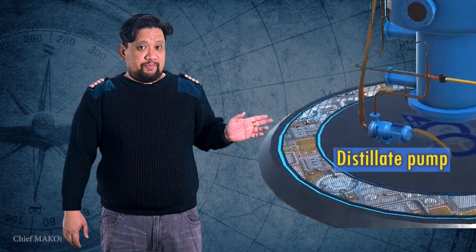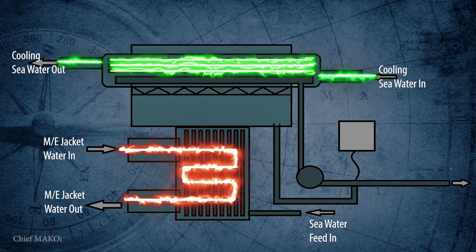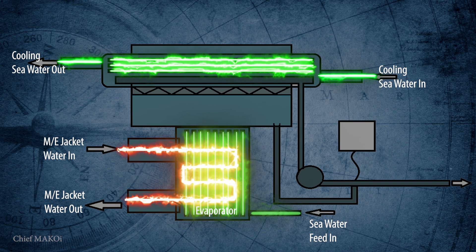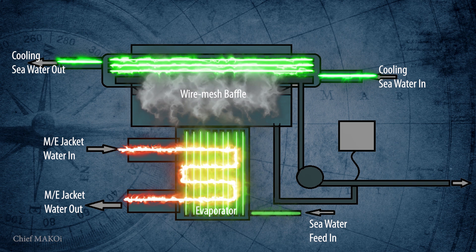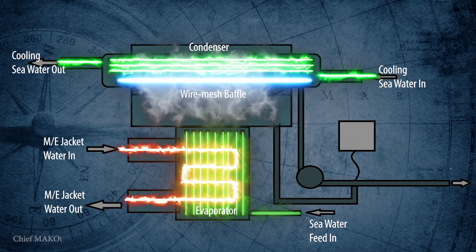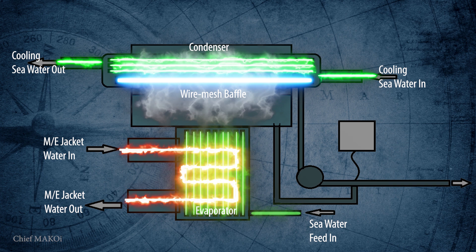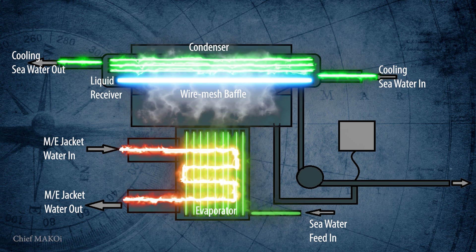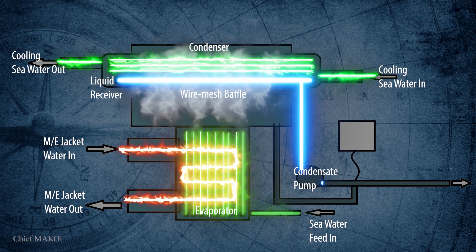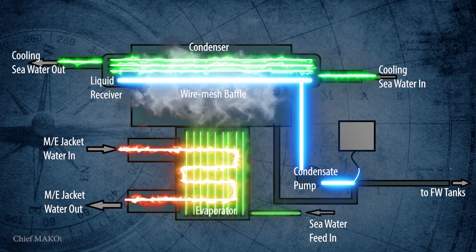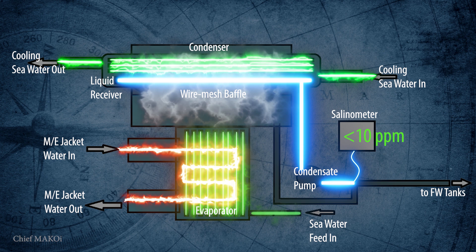So how does the distillation plant work? The flow operation begins when seawater enters the evaporator. From there, it absorbs heat and evaporates, passes through a baffle screen to filter out remaining impurities, and then comes into contact with the condenser tubes where it is cooled down and condenses back into liquid, but this time without the salt content. This condensate is collected in the liquid receiver directly below the condenser tubes, where it is then suctioned by the condensate pump and delivered into the freshwater tanks. Before it can go there, it is sampled and analyzed by the salinometer. If the remaining salt content is below 10 parts per million, the freshwater is delivered into the tanks. If it's higher than 10 ppm, it is diverted back to the evaporator.